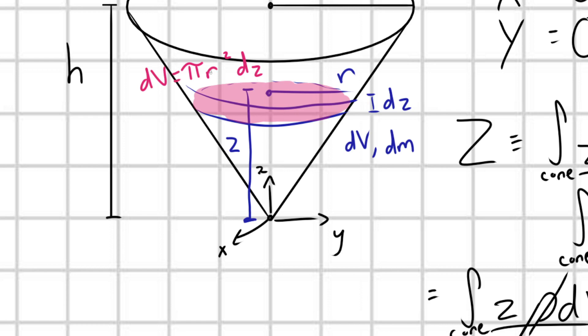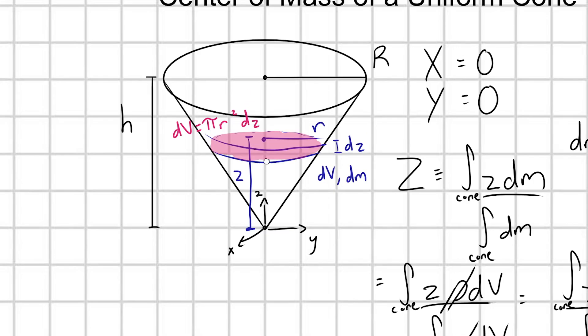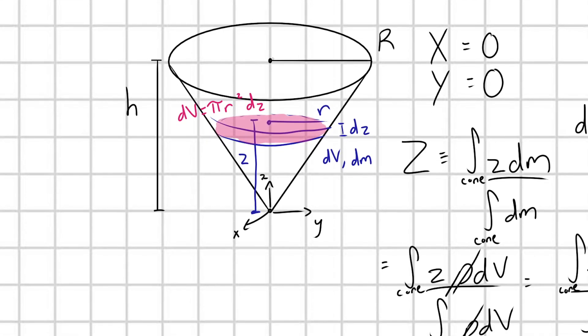The only problem is we still don't really know what r is. I kind of just introduced this little r here, but we don't know exactly what that is. So let's go ahead and figure that out next. Clearly, r is going to be somehow dependent on the location z. As you move up this cone, r is going to continue to get bigger as z gets bigger.